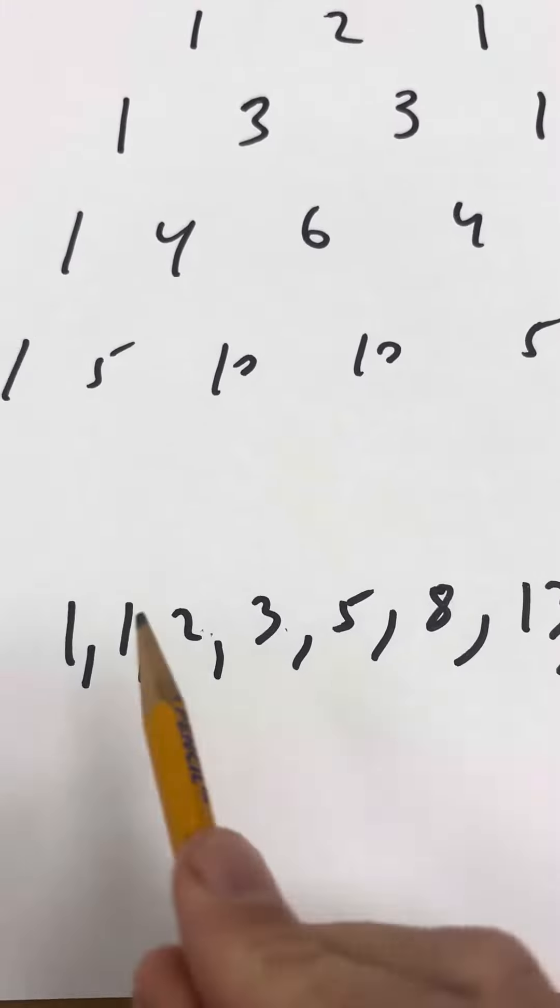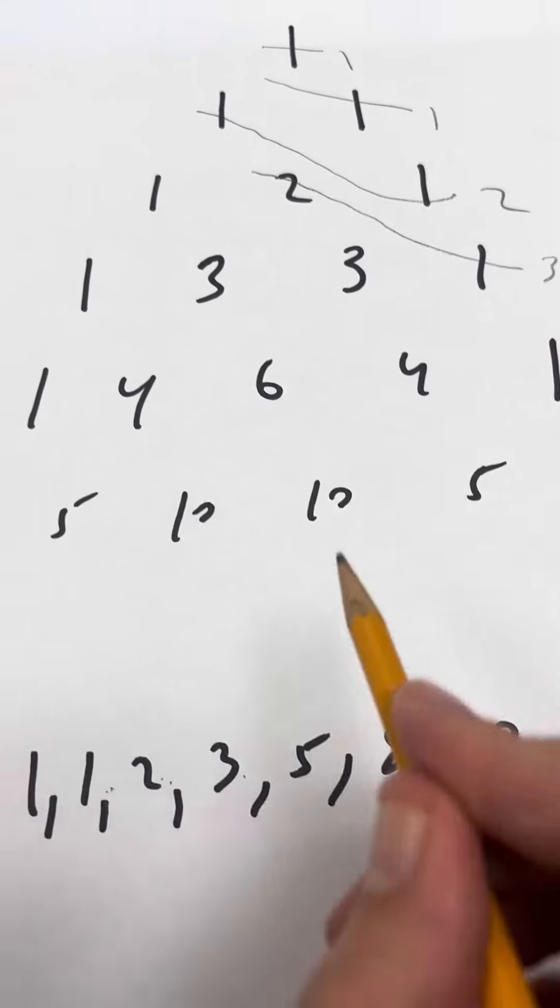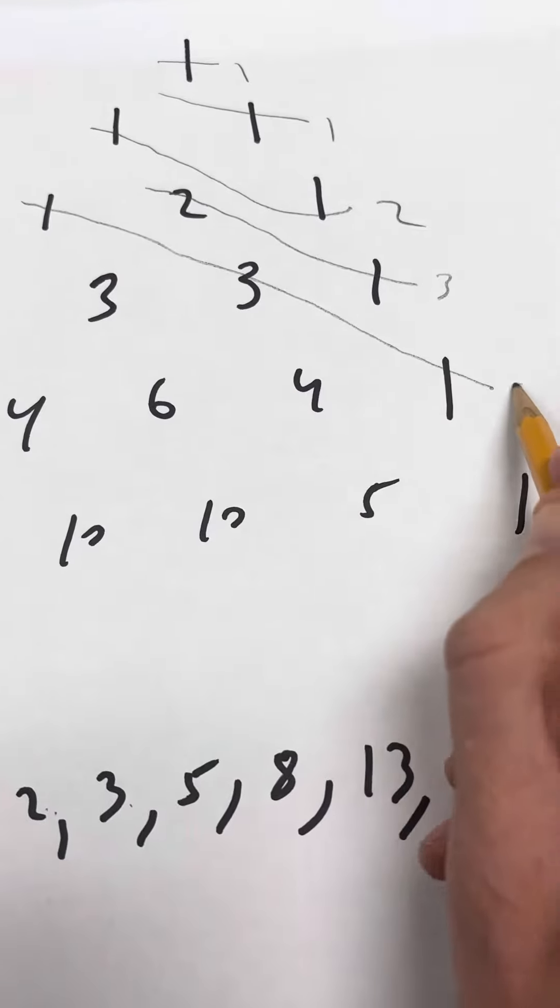Where's the 3? Right here. 2 plus 1 is 3. Where's the 5? 1 plus 3 is 4, plus 1 is 5.